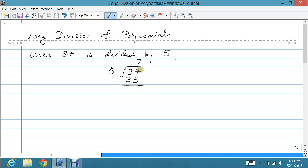I take the difference of these two numbers and this gives me the remainder. I cannot continue any further. So 2 is called the remainder, 37 is called the dividend, 5 is called the divisor, and 7 is called the quotient.